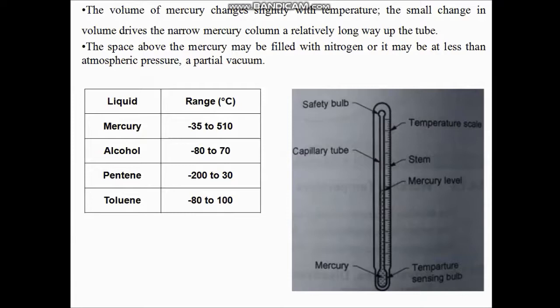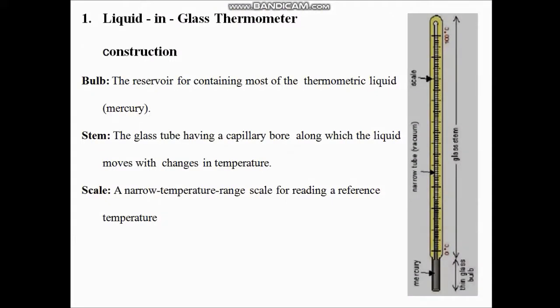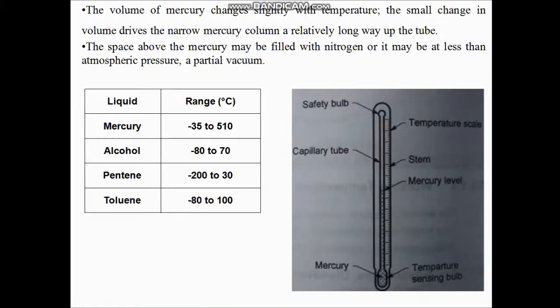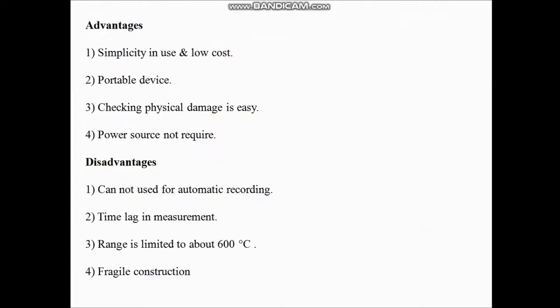This is one type of expansion thermometer. We call it an expansion thermometer because as temperature changes, the liquid inside expands. When answering an exam question, the construction will consist of bulb, stem, and scale; draw a diagram, then write the range of different liquids that can be used. Then write advantages and disadvantages. Advantages: it is very simple to use, cheap, portable, does not require any magnifying lens, and no power source is required.